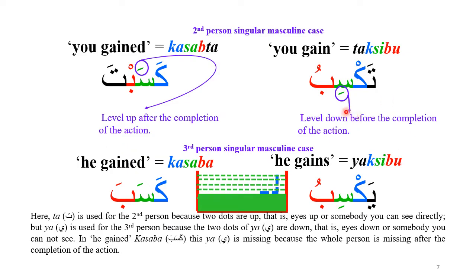In the present tense, 'Taqsibu' means 'you gain.' 'Kasapta' means 'you gained' in the past tense. If Ta is the first letter, it means present tense — you gain, you are gaining, or you will gain. 'Kasapta' means you gained; the action is complete because the subject comes after the verb. If the subject is before the verb it is present tense; after the verb it is past tense. In 'Taqsibu,' the Kasra indicates the Mustawa (level) was lower, but when you have gained and the action is complete, the level is up — shown by the Fatha.